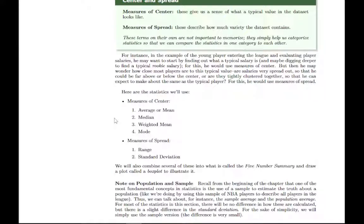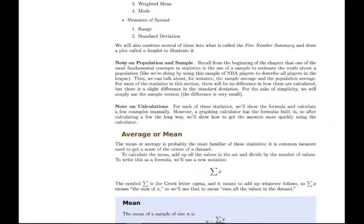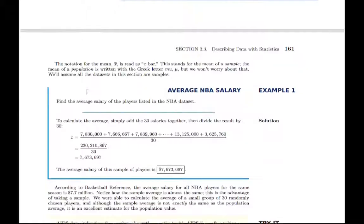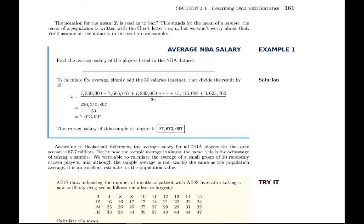We'll save ourselves some time and effort — we'll see how to calculate each one with the formula quickly, but most often we'll just enter the data in the calculator and let it work for us. There's a note that if you're looking at a population versus a sample there's one slight distinction when we get to the standard deviation. The first statistic is the average. It's probably the most familiar and common one — to get the average of a list of numbers you add up all the numbers and divide by how many there were. For example, to find the average salary you add up all salaries and divide by 30 because there are 30 players.